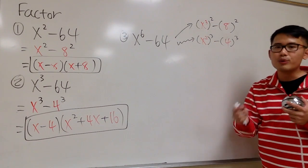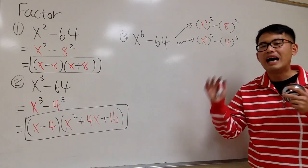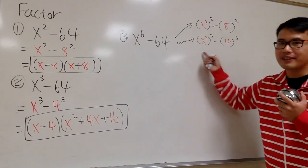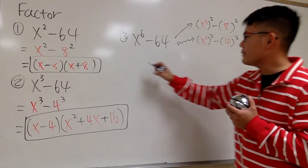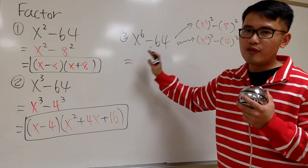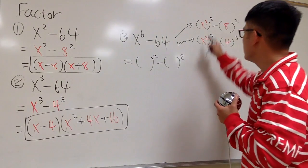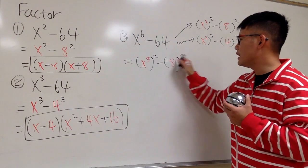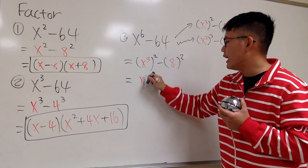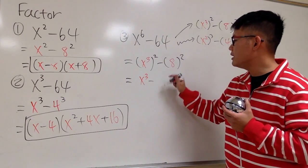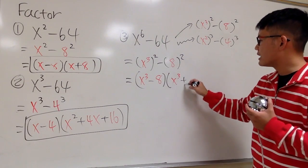Which one is easier? Well, the first one — the difference of two squares — is easier. So we look at x to the sixth power minus 64 as x to the third power squared minus 8 squared. That gives us a squared minus b squared, so we get x to the third power minus 8, times x to the third power plus 8.